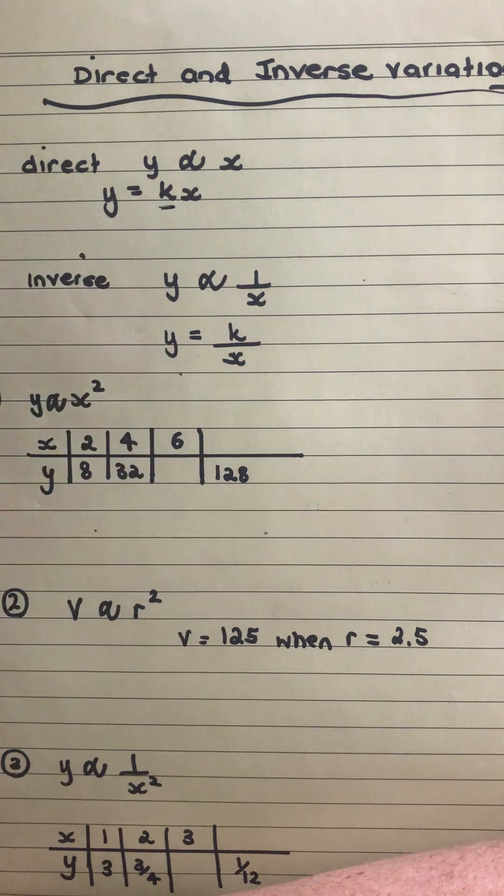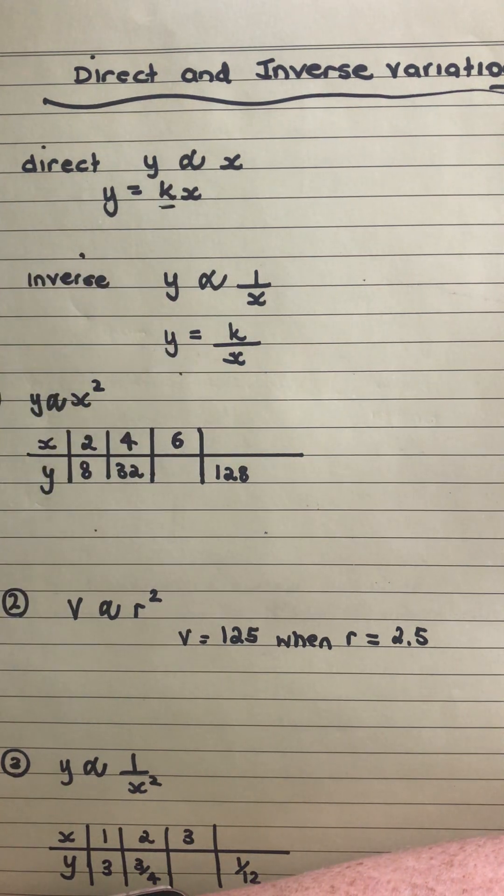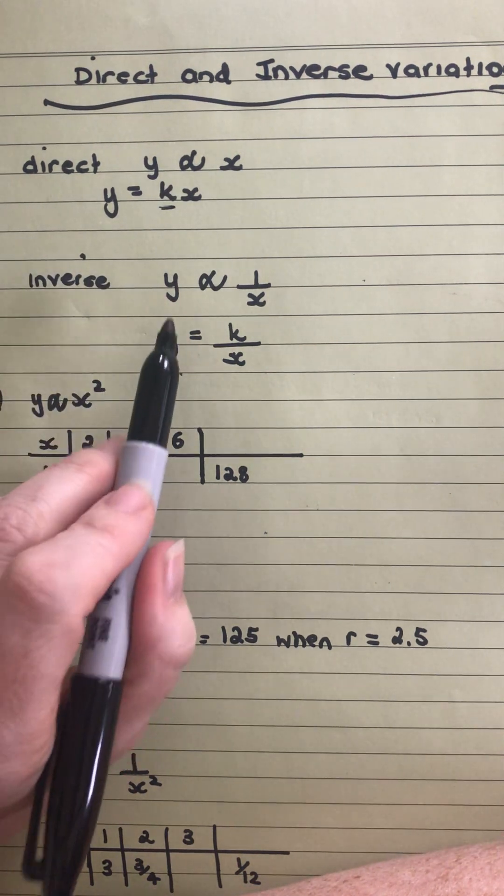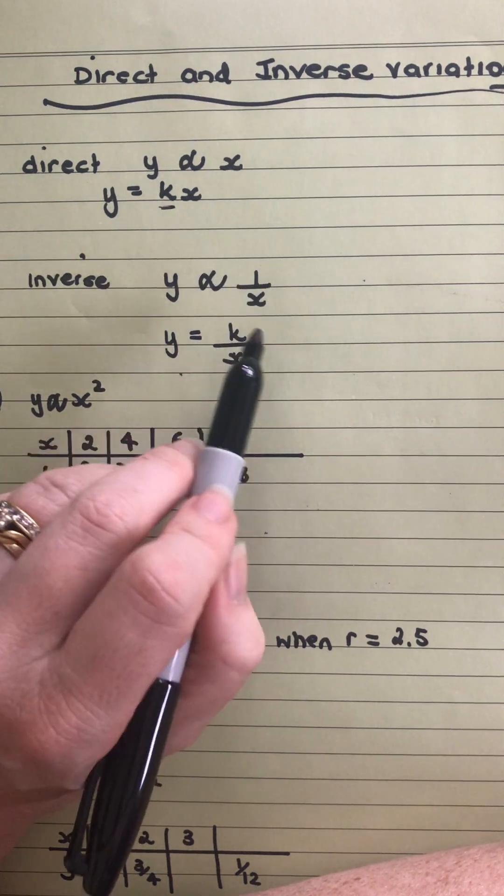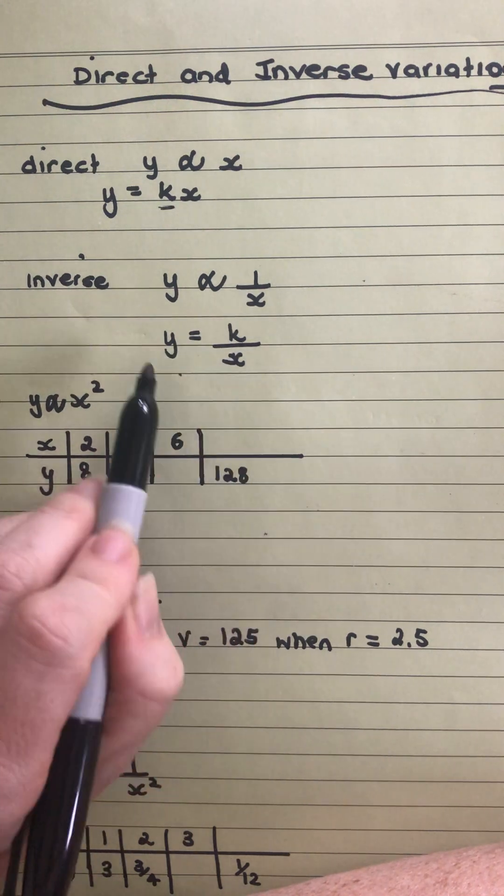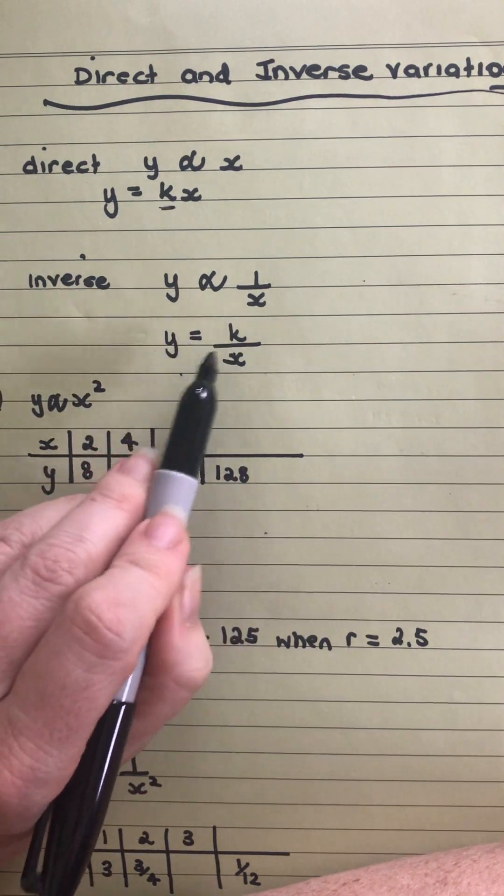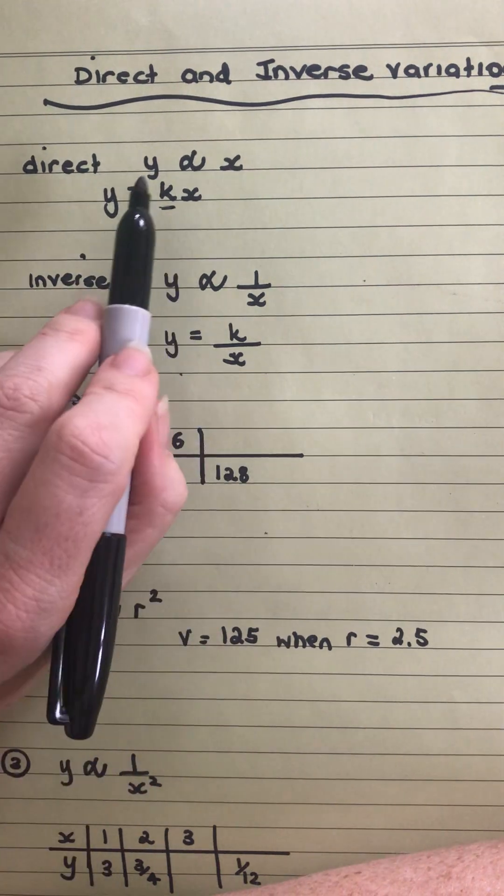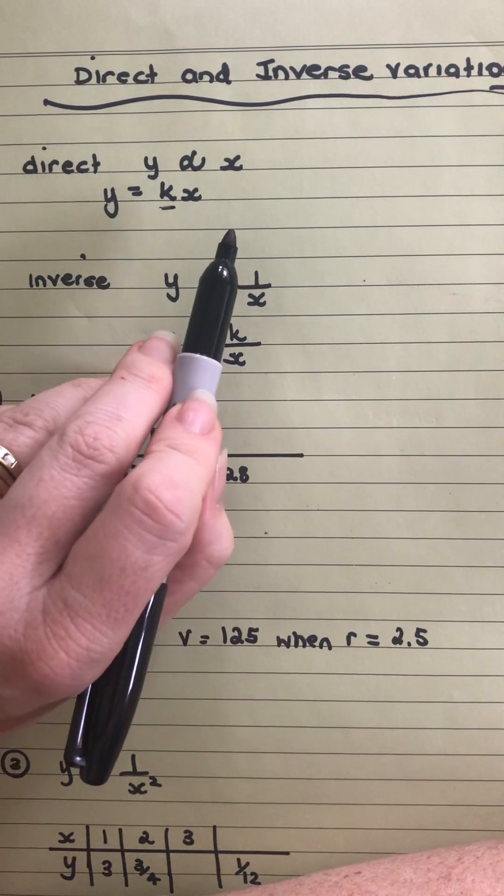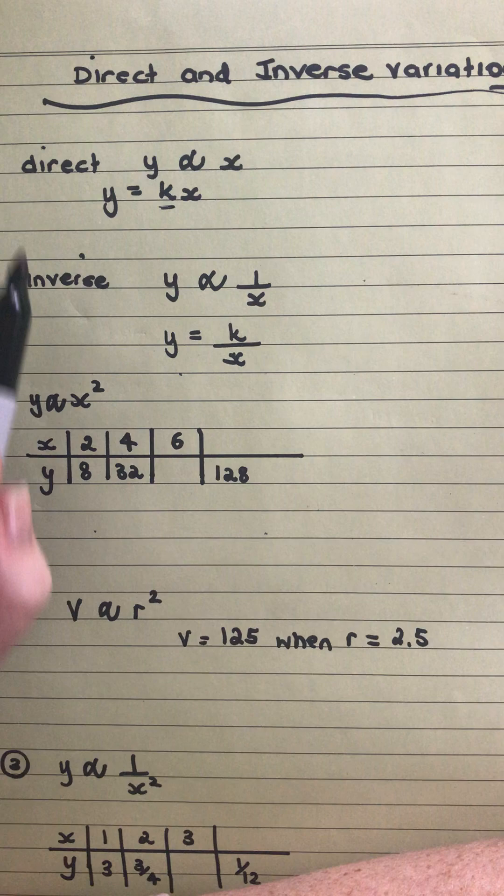If we're writing our inverse, we write y is proportional to 1 over x. The inverse is where we put the 1 over. If we want to do that with the equal sign in, we make it k over x. They're the two things that we need to be able to do: write that statement, and change it to where we have the k in it for those two scenarios.